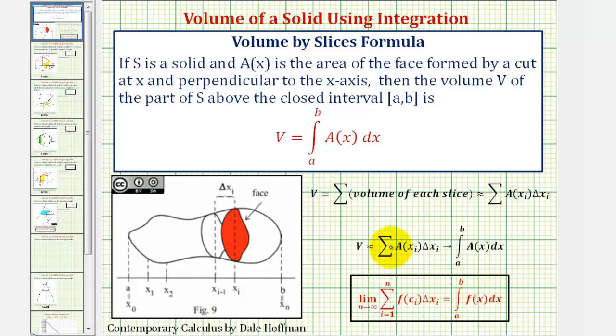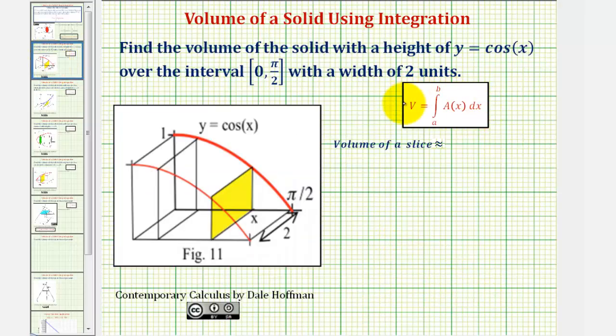So going back to our example, to help us set up our volume formula here, we'll determine an approximate volume of a single slice, which will lead us to our definite integral. Let's begin by determining the approximate volume of this slice here by finding the area of the face and multiplying by the thickness, which would be delta x.